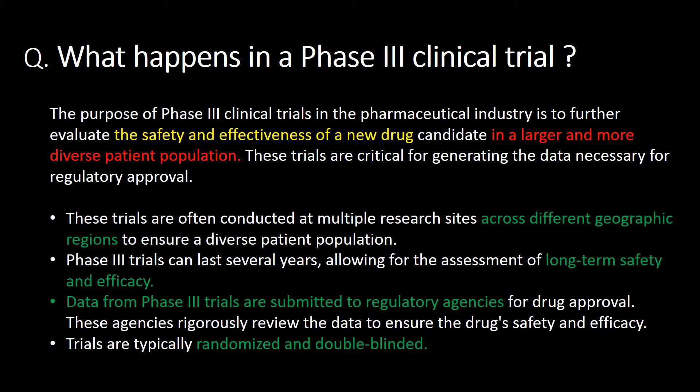What happens in a Phase 3 clinical trial? The purpose of Phase 3 clinical trials is to further evaluate the safety and effectiveness of a new drug candidate in a larger and more diverse patient population. These trials are critical for generating the data necessary for regulatory approval. They are often conducted at multiple research sites across different geographic regions. Phase 3 trials can last several years, allowing for the assessment of long-term safety and efficacy. Data from Phase 3 trials are submitted to regulatory agencies for drug approval, which rigorously review the data.